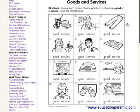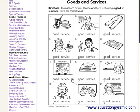One thing is clear from this exercise: services are provided by human beings, whereas goods are non-human. For example, a car plant produces a good, but a car wash company is imparting a service to their customers.